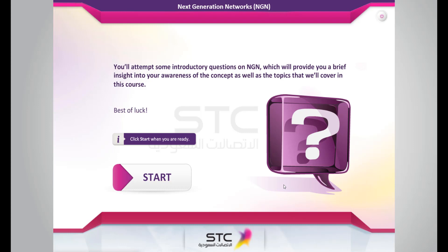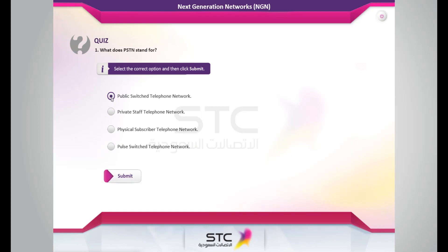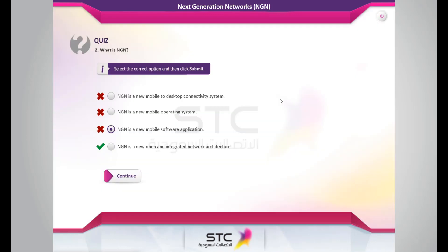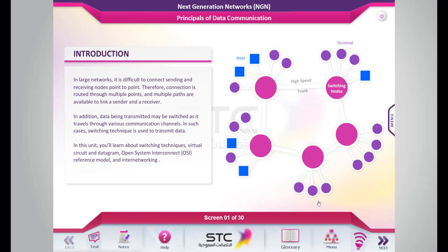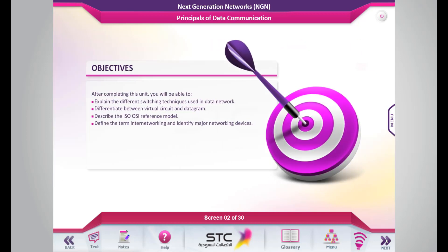Click Start when you are ready. In large networks, it is difficult to connect sending and receiving nodes point to point. Therefore, connection is routed through multiple points, and multiple paths are available to link a sender and a receiver. After completing this unit, you will be able to explain the different switching techniques used in data networks and differentiate between virtual circuit and datagram.